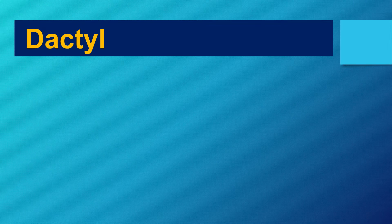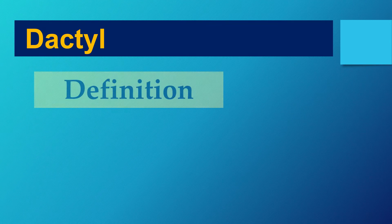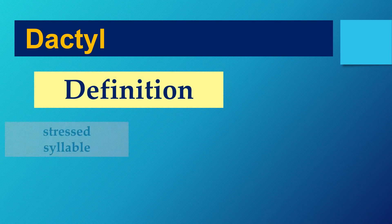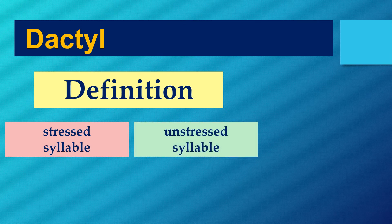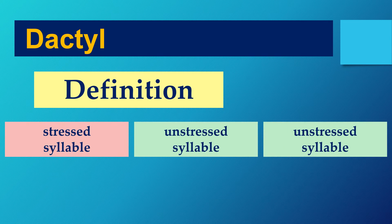Now let's look at dactyls. What is a dactyl? It's a word with a stressed syllable at the beginning and then two unstressed syllables — stressed syllable followed by two unstressed syllables. Let's find some dactyls all around town. There are lots of dactyls.